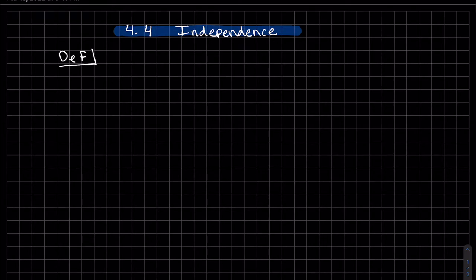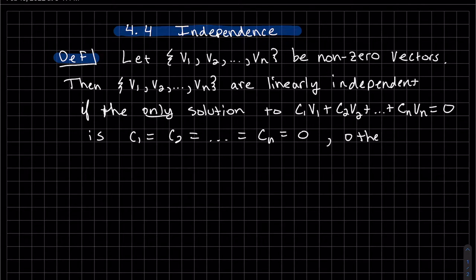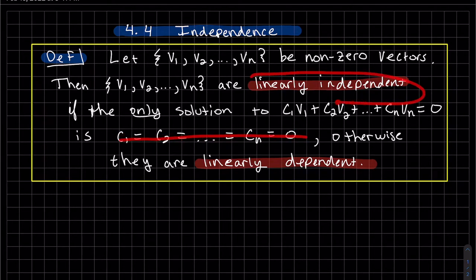Okay, this section is 4.4 independence. We're going to start off with the definition of it. So if we have a set of vectors, they are linearly independent if the only solution to this linear combination, which is equal to zero, is that each of these constants are all zero. So if all the constants are zero, then it is linearly independent. Otherwise, the vectors are linearly dependent.